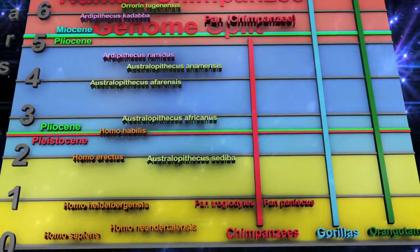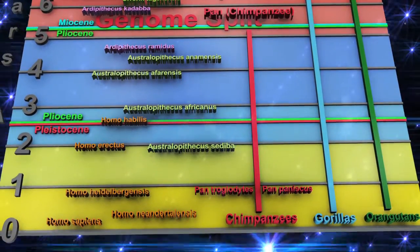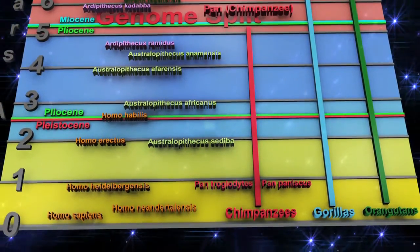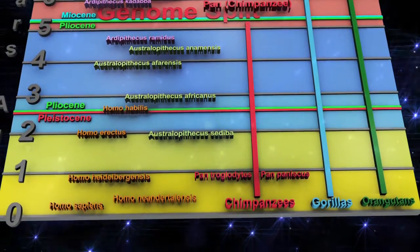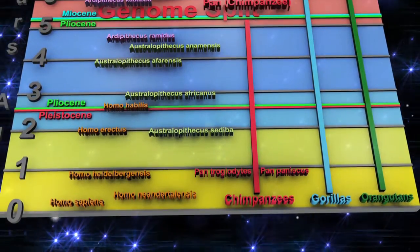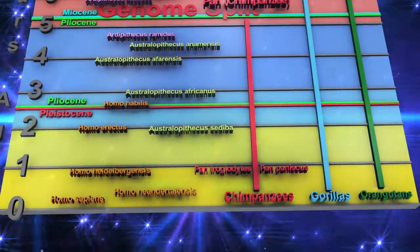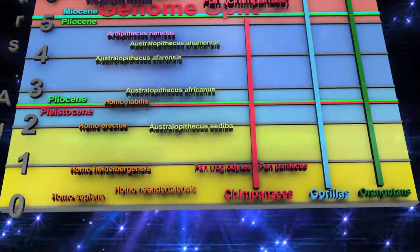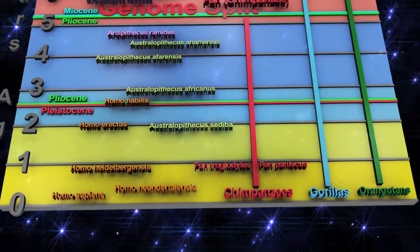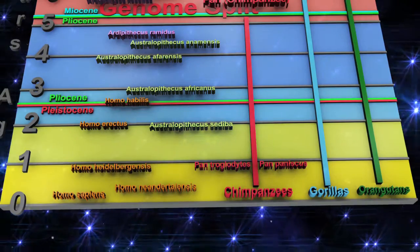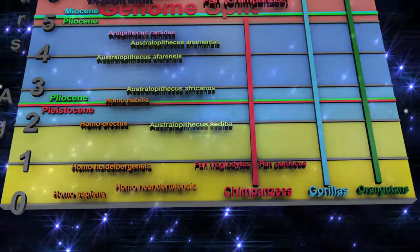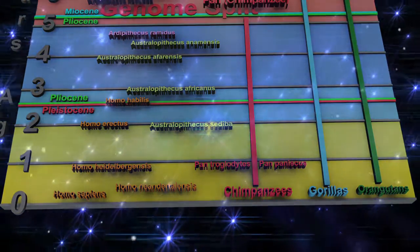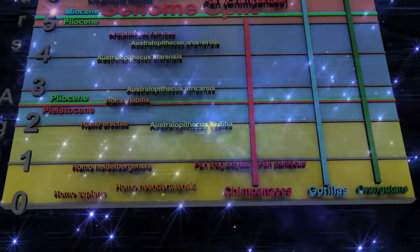Approximately 30,000 years ago, our closest remaining relative on the family tree, Homo neanderthalensis, faded from existence — leaving us the sole living member of the genus Homo. Let's now return to our look at the genus Australopithecus with a trip to South Africa.